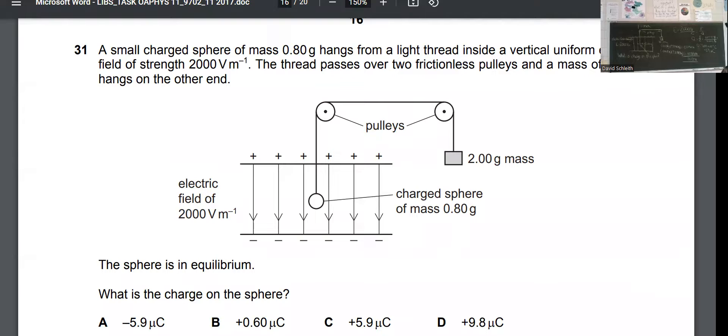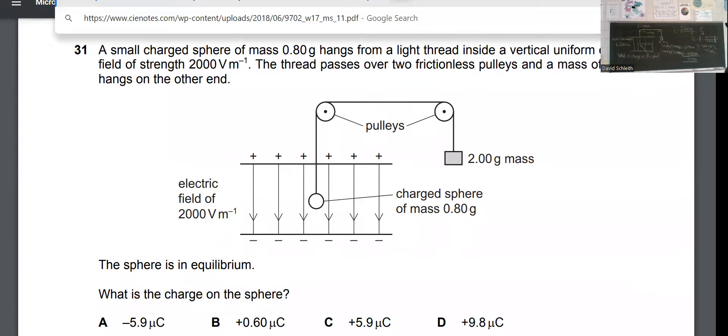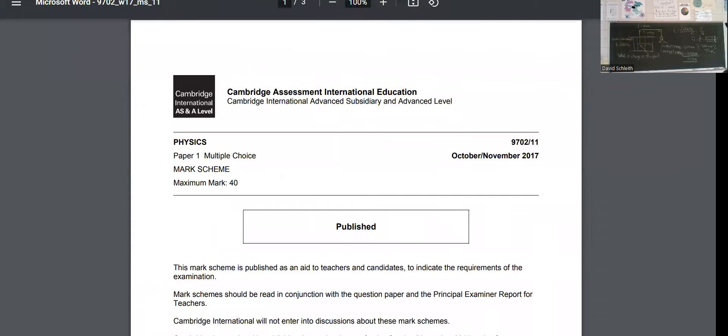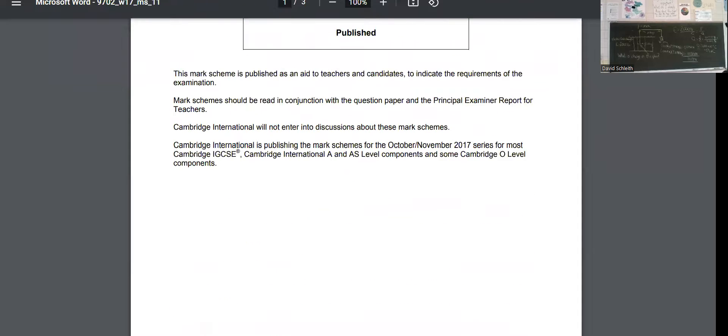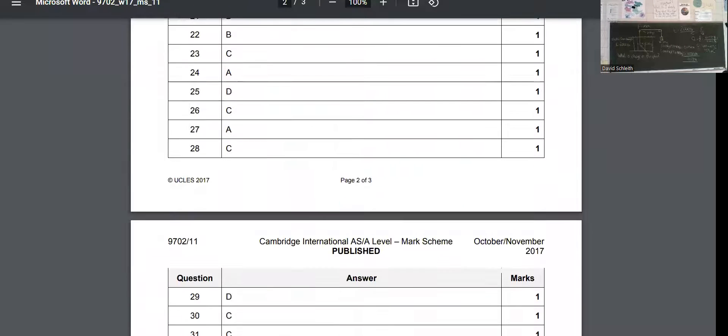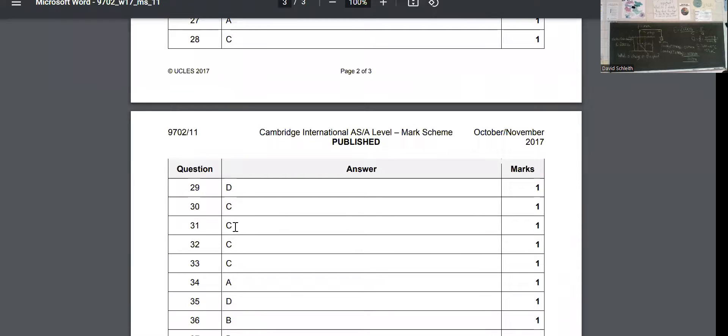But to remove any doubt, we're going to queue up the mark scheme for this paper. So I encourage you as you study for these ACE physics papers to look at past papers and to give yourself immediate feedback so that once you try a question out like this, you go into the mark scheme. Question 31. And indeed, the correct answer is C.